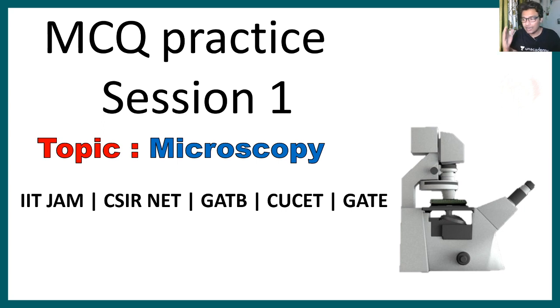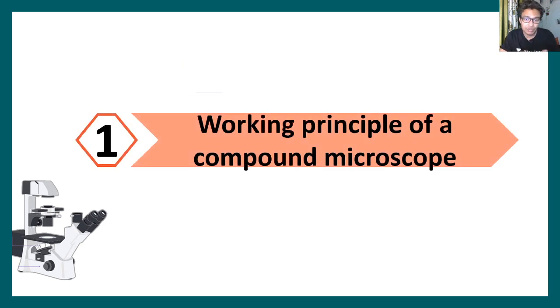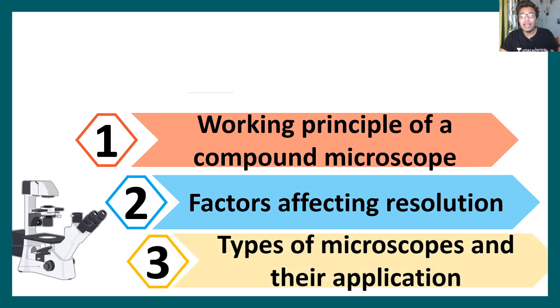So we would first analyze the trend in this video, so we would get to know what are the topics from which questions are asked in IIT JAM specially. First of all, they would ask questions from the working principle of the compound microscope, they can also ask questions about the factors that affect resolution, and lastly they can ask questions about principles and usage of several types of microscopy. So these are the three major points from which they can possibly ask questions.